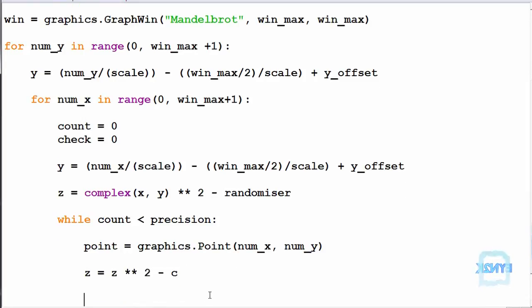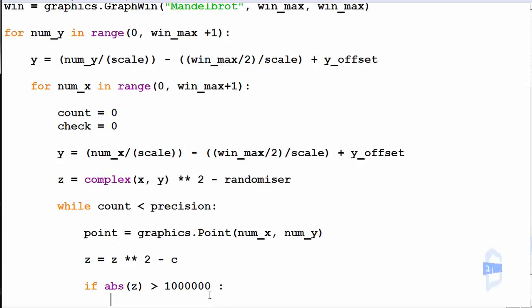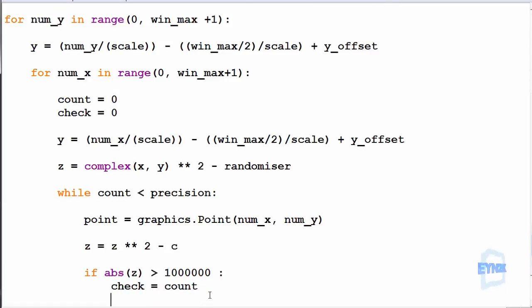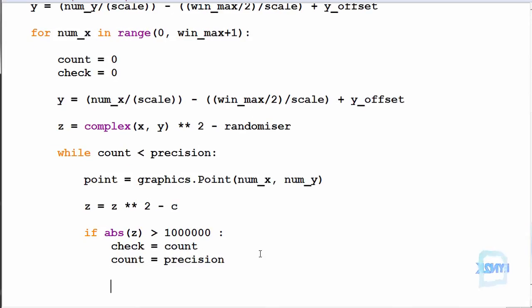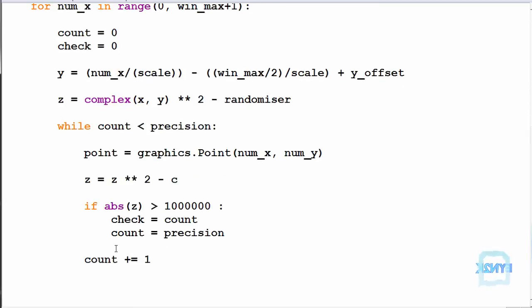So now we need one if statement for a check. Since there's a blowout so quickly, we'll make sure it doesn't blow out. And if it does blow out too quickly, we'll simply stop the while loop. So if abs of the Z is greater than say 10 million or whatever that number is I put in there, we can make check equal to count. So we now go to check. We can make count equal to precision, so that stops running the loop. Down here we can simply make count plus or equal to 1, so we keep checking our update in the while loop, so that we'll run this until we reach precision.